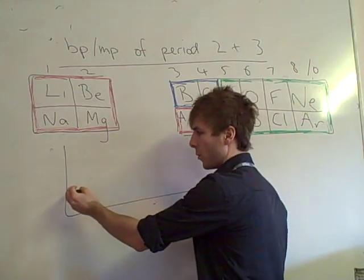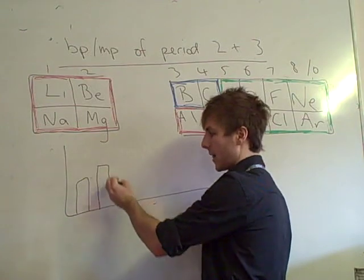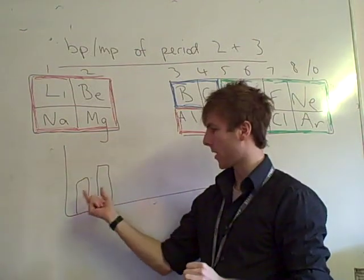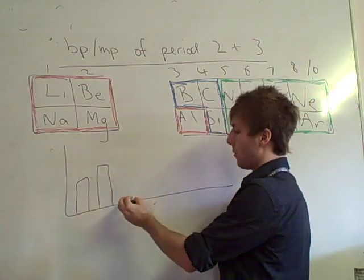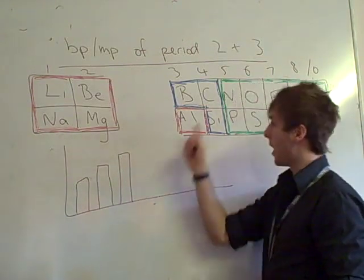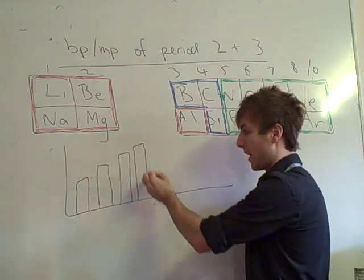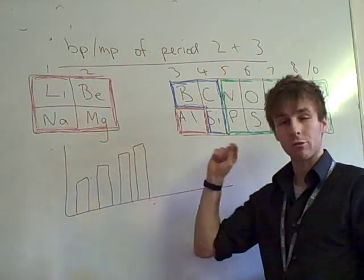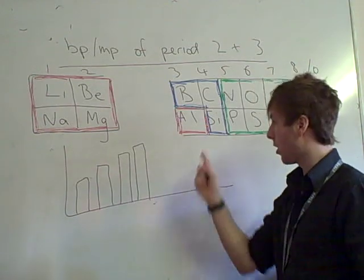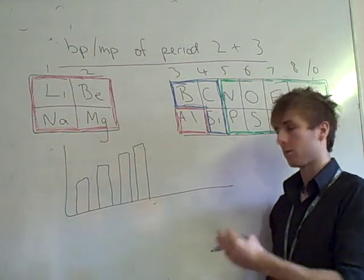My group one would be fairly high. My group two would be slightly higher. My group three would be even higher still. And my group four, because they're giant covalent, would be even higher still. After group four, we get this dramatic drop. And it's all because of a change in structure, a change of the forces holding them together.